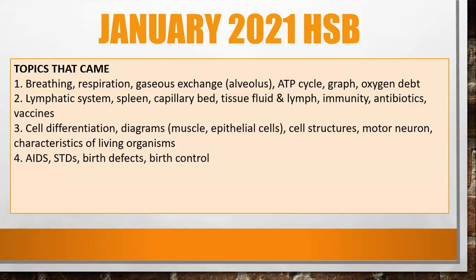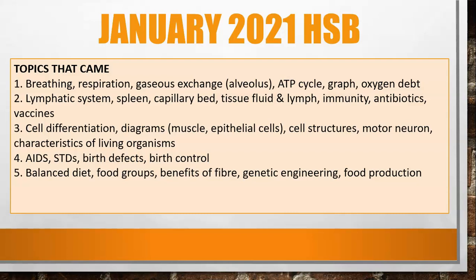Question four was all about AIDS and STDs, birth defects, and there was a table on birth control. Question five dealt with balanced diet — looking at food groups, the benefits of fiber — and then it went on to look at genetic engineering in producing vitamin A, the advantages of genetic engineering, and how to improve food production, linking up nutrition and genetics.